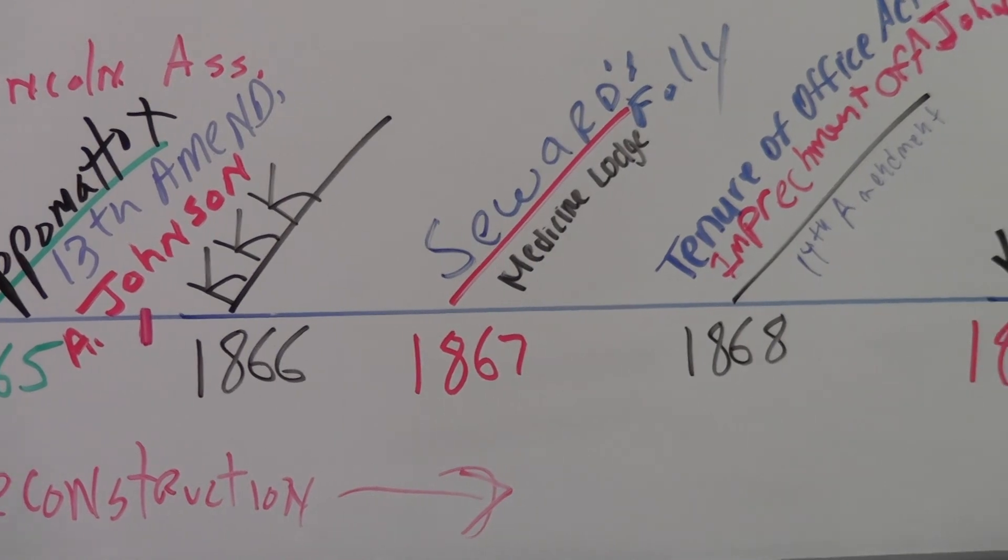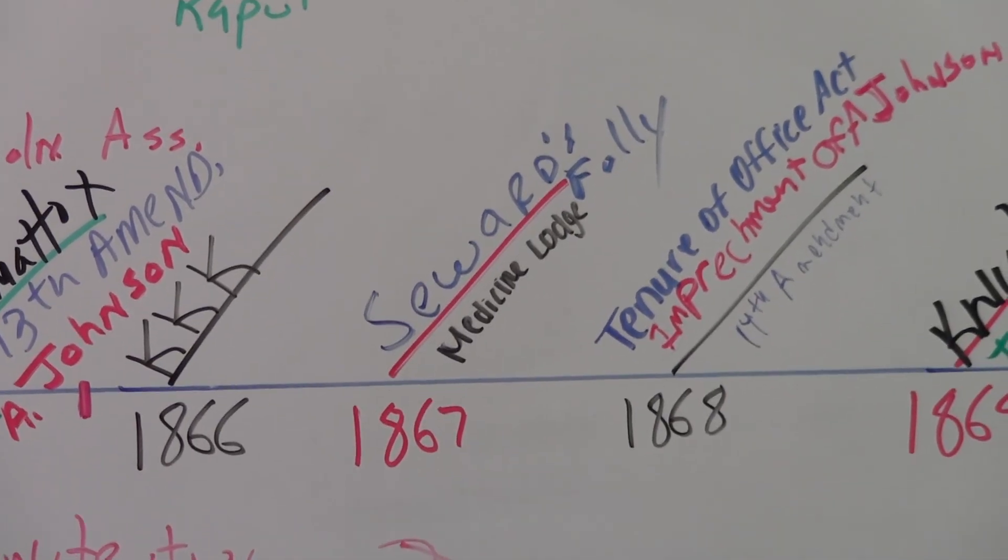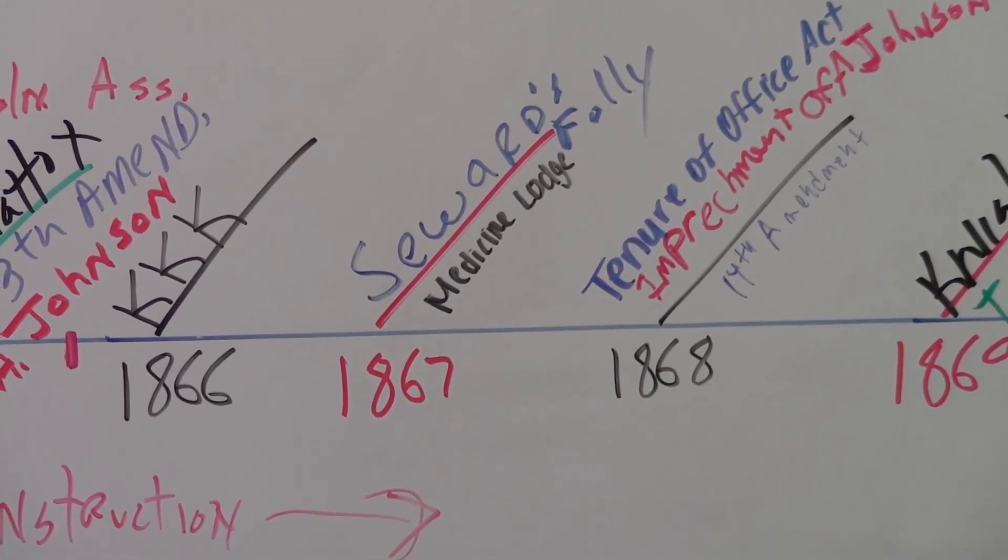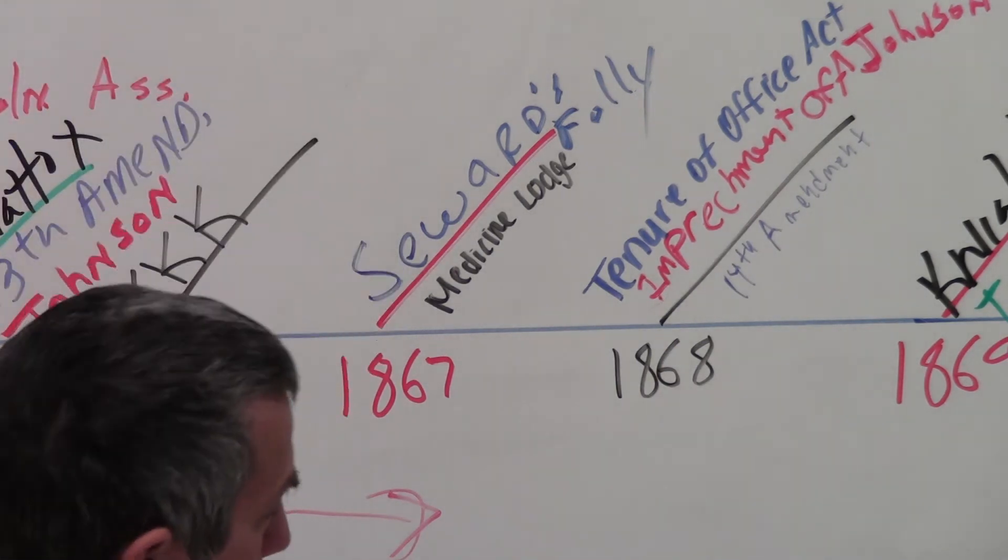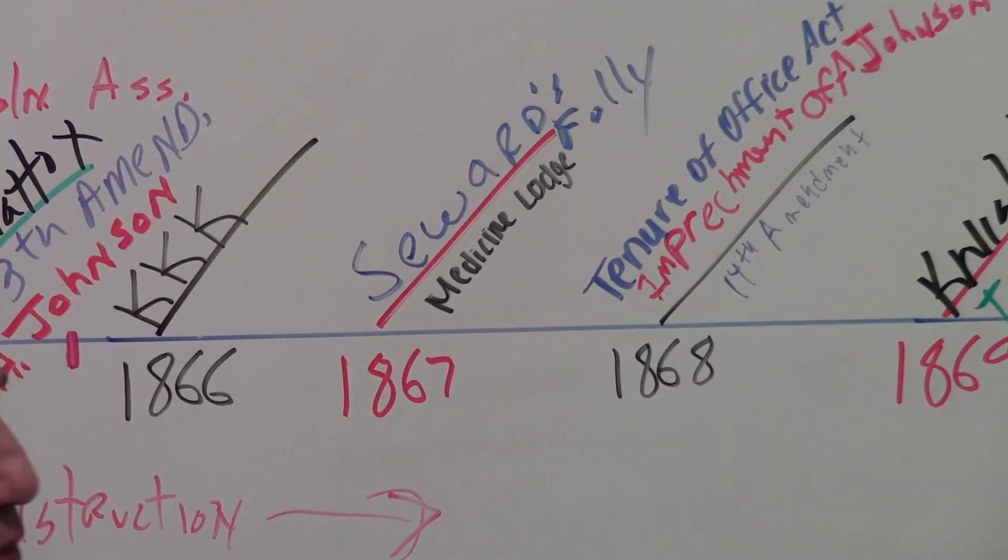In 1867, completely out of nowhere, we're going to get William Henry Seward in what's called Seward's Folly. Seward's Folly was the idea of purchasing Alaska. Everyone thought it's a waste of money, we don't need it. But then we get oil, and then we get gold. So Alaska worked out pretty well.